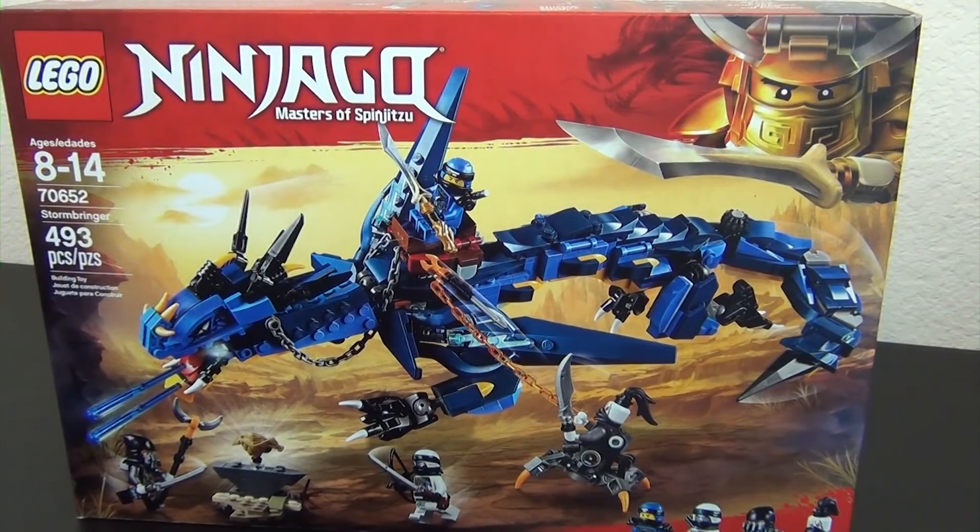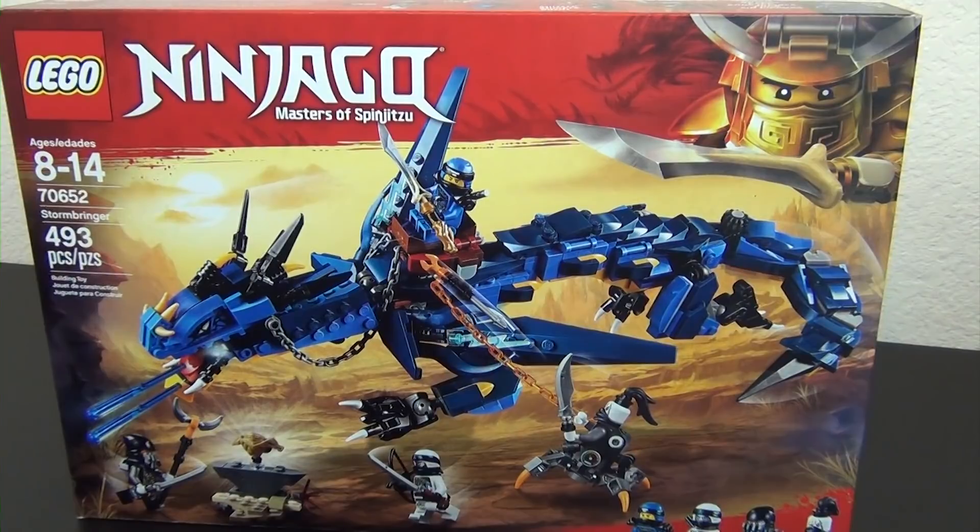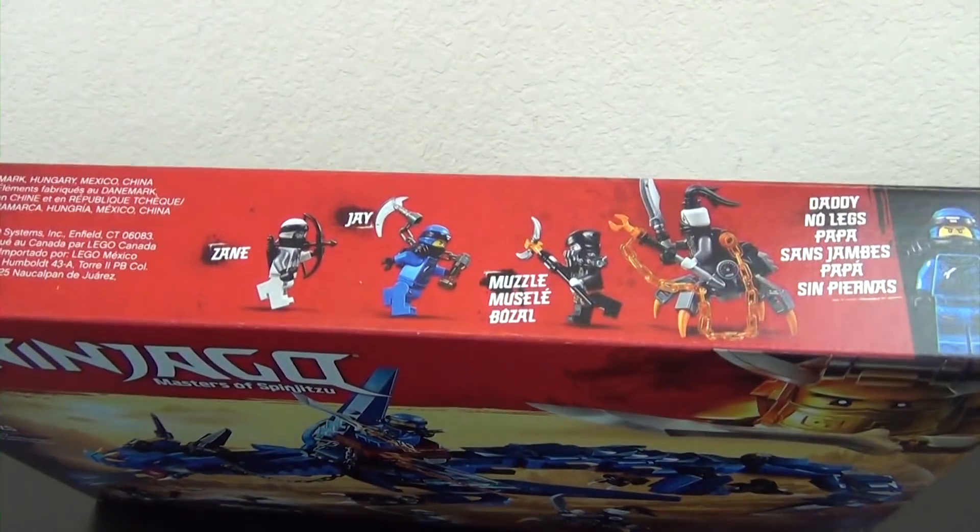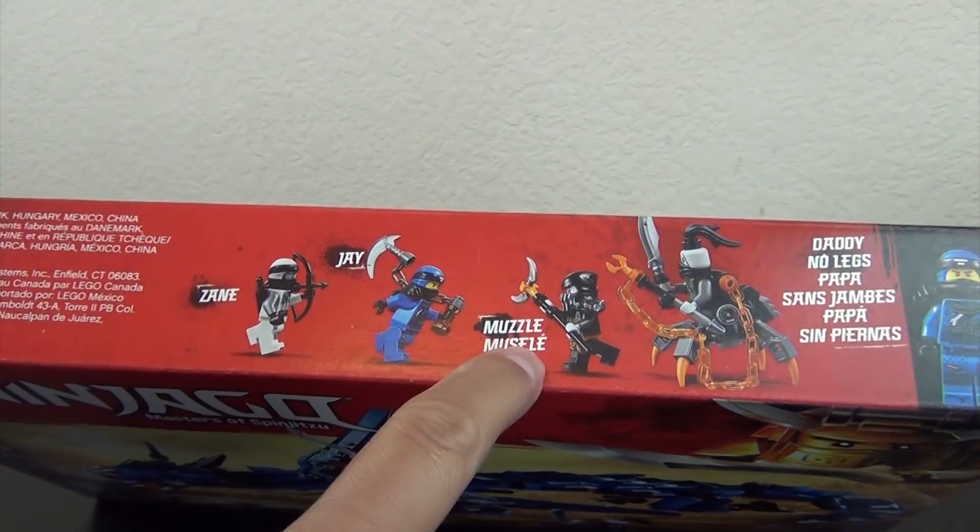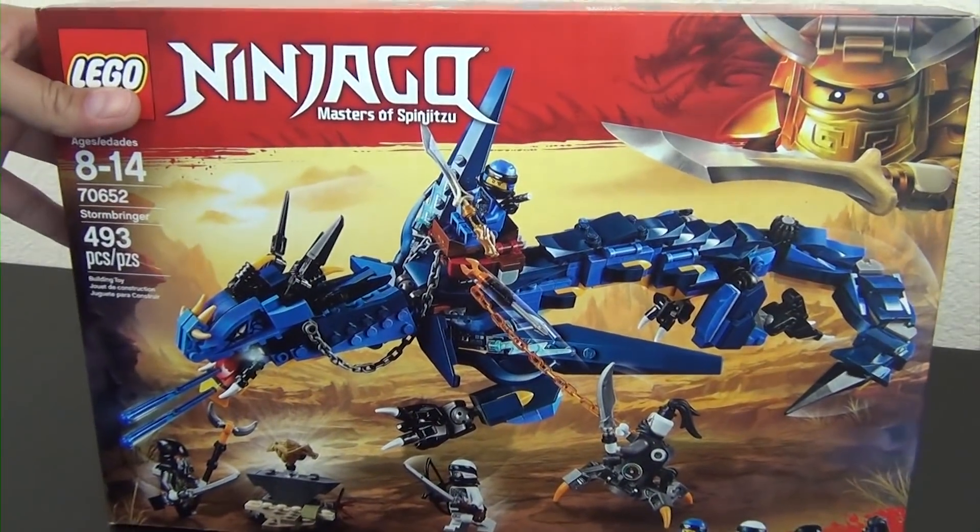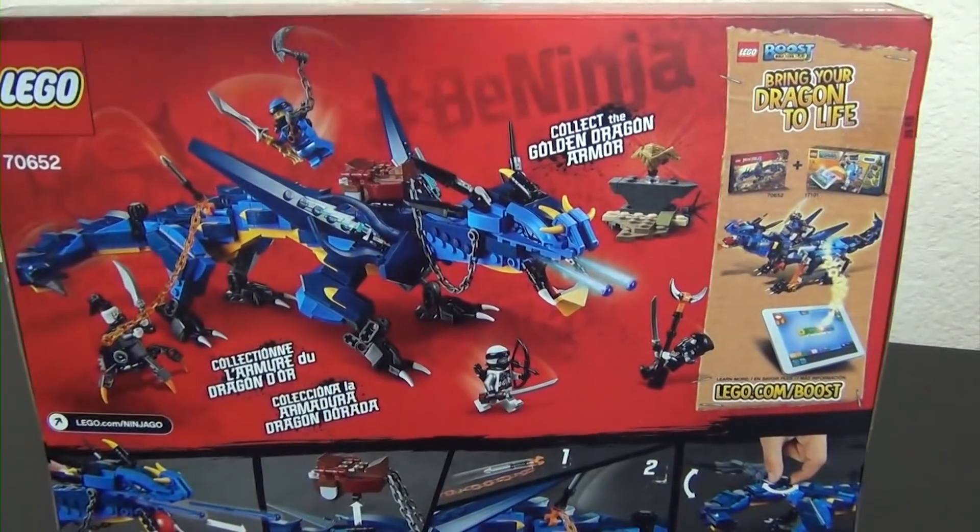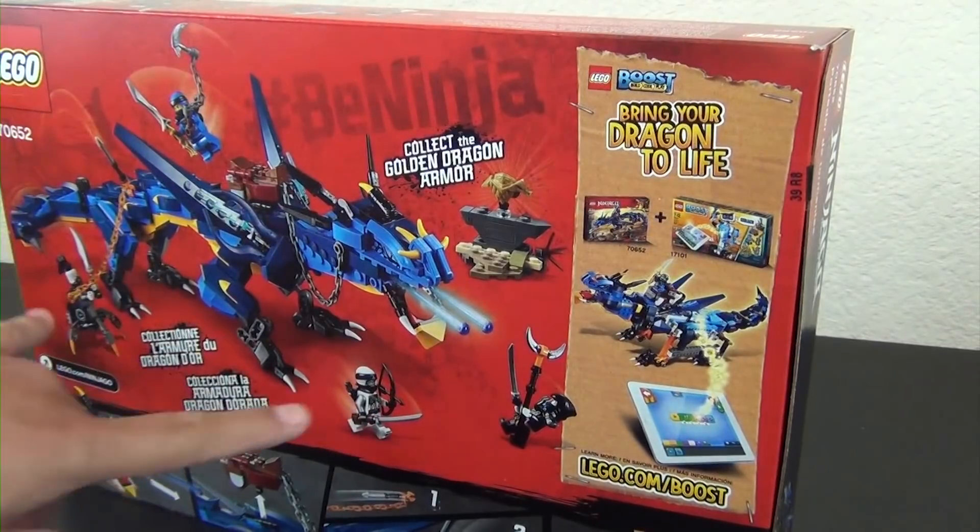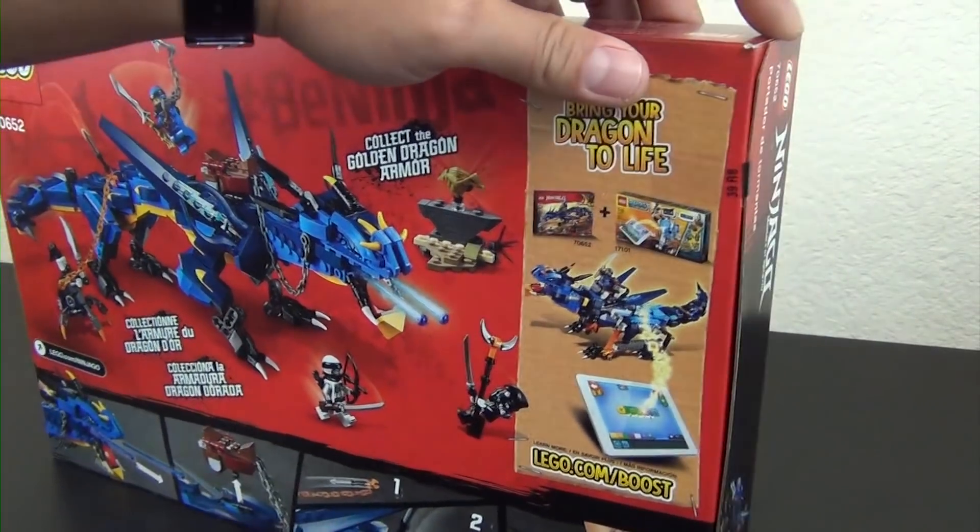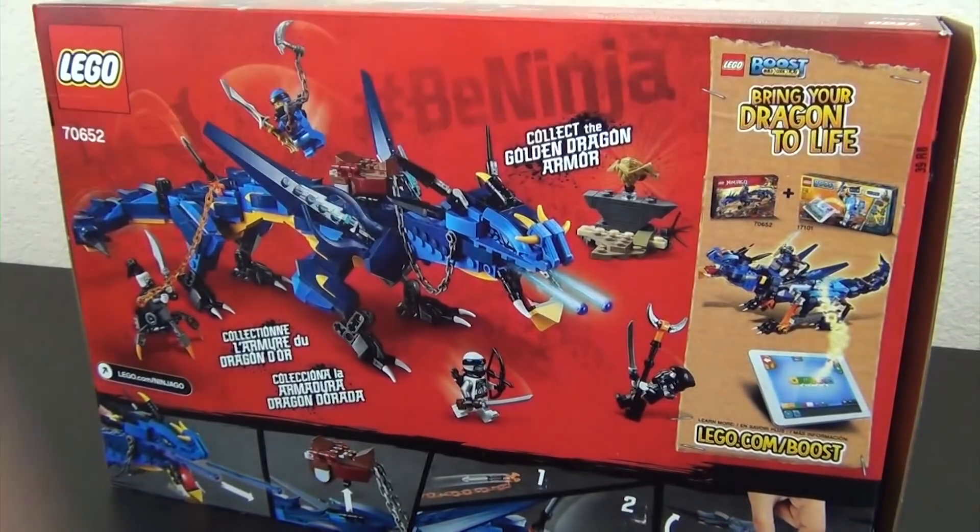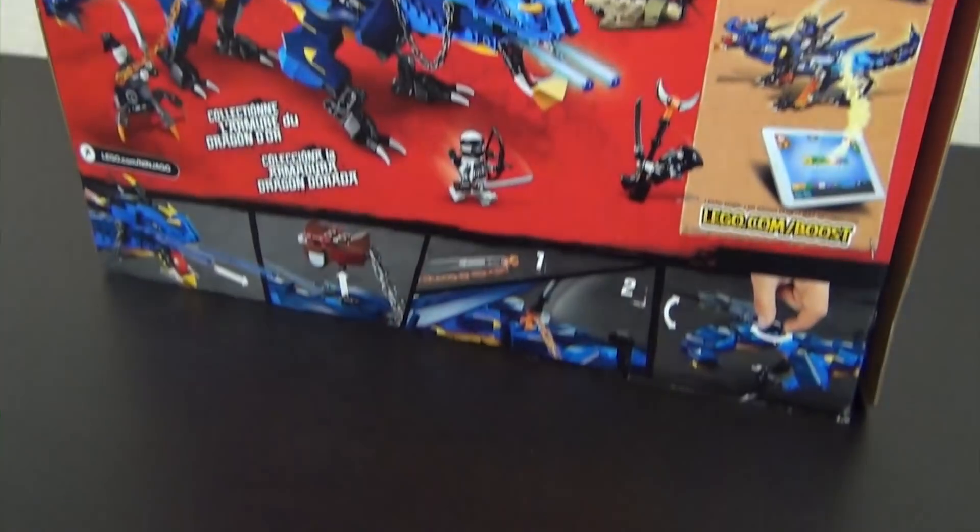Hey everyone, welcome back to the Hidden Brick where today we're going to build the LEGO Ninjago Stormbringer. This is set number 70652, 493 pieces. Looks like we got four minifigures: Zane, Jay, Muzzle, and Daddy No Legs. Cool little set with a blue dragon and some pretty cool villain figures. I'm really digging the villains for this wave of LEGO Ninjago.